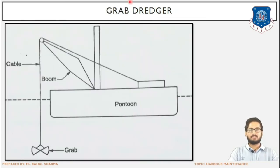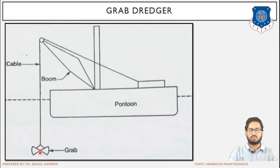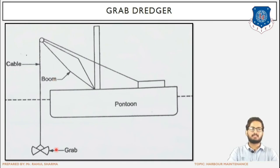The third type of mechanical dredger is the grab dredger. Here, a boom decides the direction and alignment. A cable is connected to a grab — which is a clamshell construction equipment with cutting jaws or teeth. The dredger is placed on a floating pontoon platform.